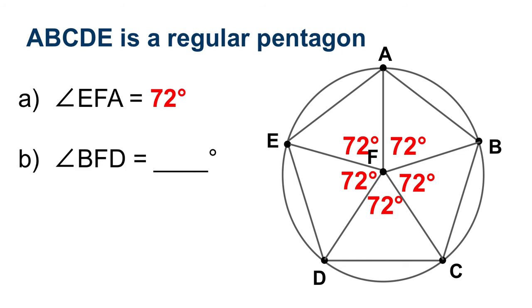Let's see if we can figure out how big angle B, F, D is. So if you think about where B, F, D is, here's B, here's F, here's D. And so we go from B to F to D. We're going to combine these two angles together. So that's going to give us 144.